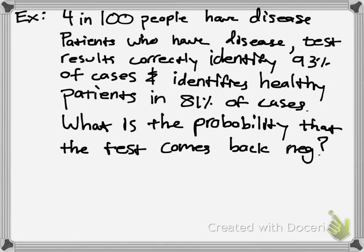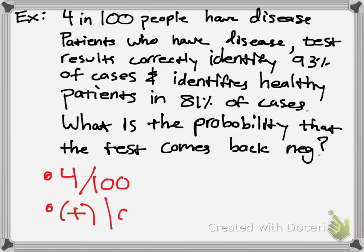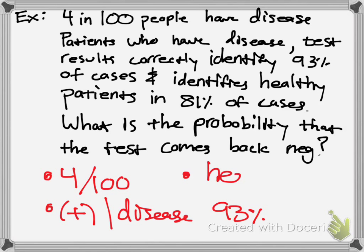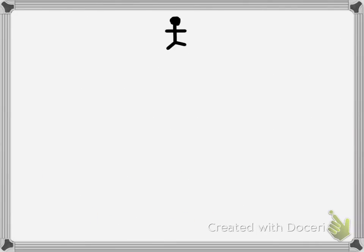So, 4 in 100 people have a disease. Patients who have the disease, the test results correctly identify them in 93% of the cases, and identifies healthy patients in 81% of the cases. What is the probability that the test comes back negative? Key information here: disease prevalence is 4 in 100. If it tests positive when the disease is present, it's 93% accurate. And the test correctly identifies healthy people 81% of the time. One way to analyze this is to create a tree diagram.